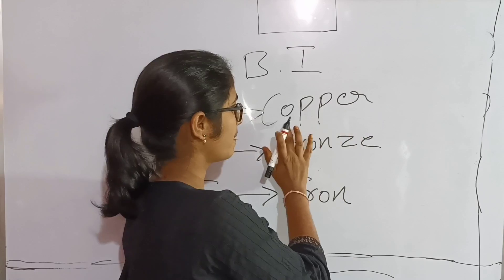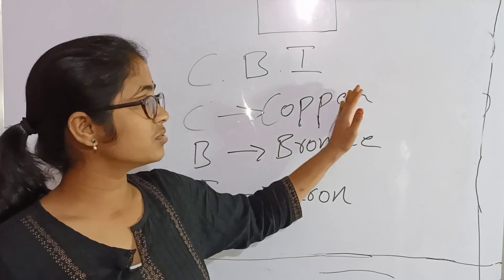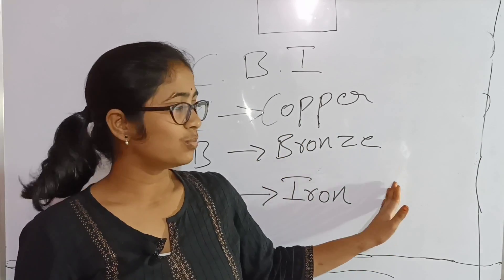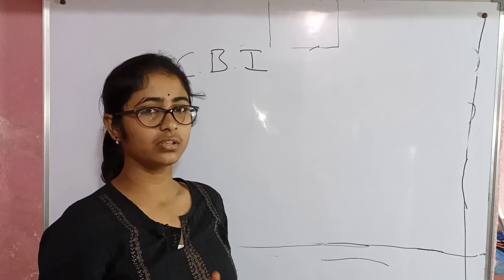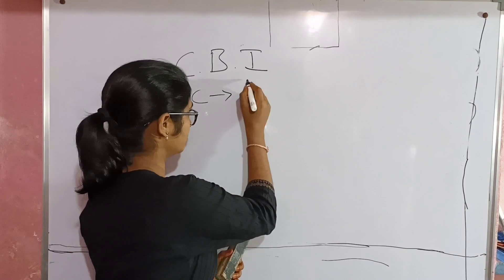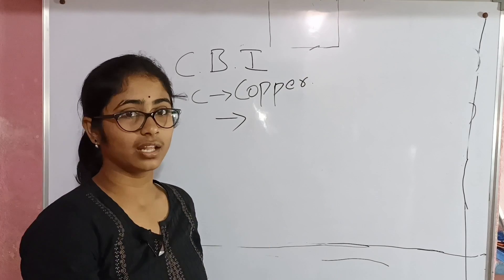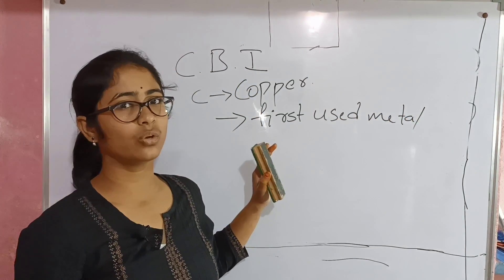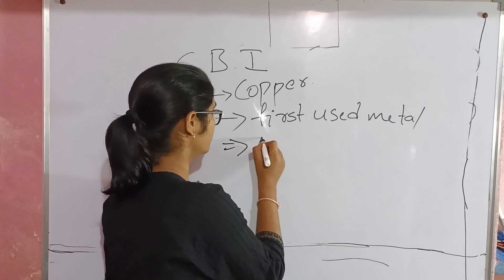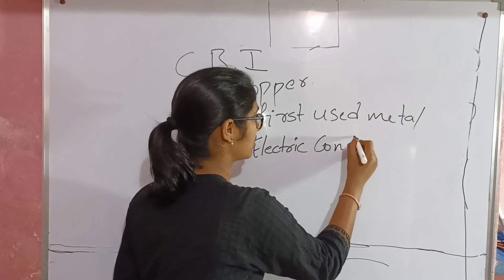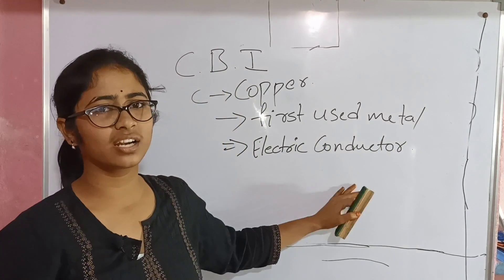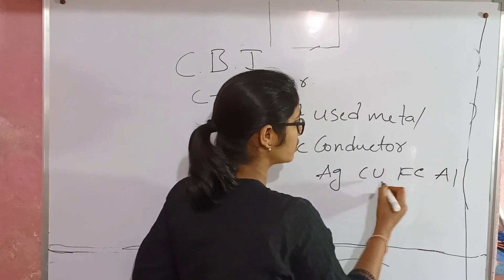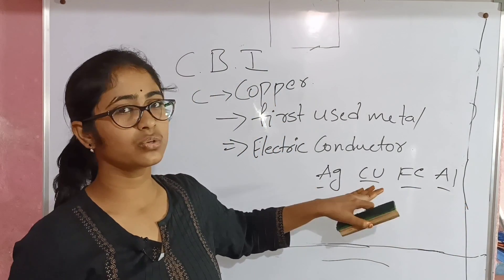Copper is the first used metal by humans. This one is a good electric conductor. Among conductors: silver, copper, iron, and aluminium — copper is also used in metals and trade. It is a good electric conductor overall.